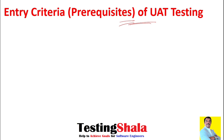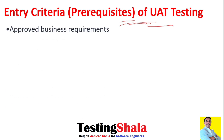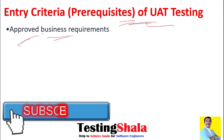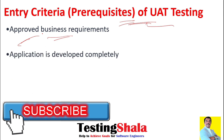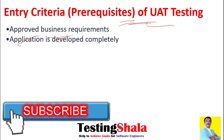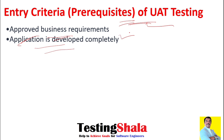First, we will try to understand what are the entry criteria or prerequisites to start UAT testing. The first entry criteria is that all your business requirements or business user stories should be approved and validated. The second criteria is that the application should be completely developed.